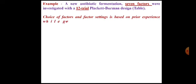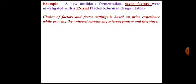The choice of factors and factor settings is based on prior experience while growing the antibiotic-producing organism and literature. The question arises: why 7 factors? We collect information from previous research, books, and literature and conclude with 7 factors. Based on previous experience and literature, we select the important factors and determine what their concentrations should be.